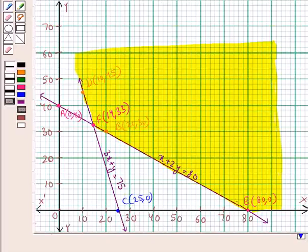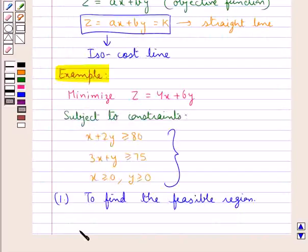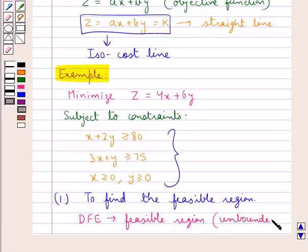This shaded region is the common region determined by the constraints. So this is the feasible region. As you can see, this feasible region is unbounded. And we have also found the point of intersection of these two lines as the point F with coordinates 14 and 33. So we have DFE as the feasible region, and this feasible region is unbounded.